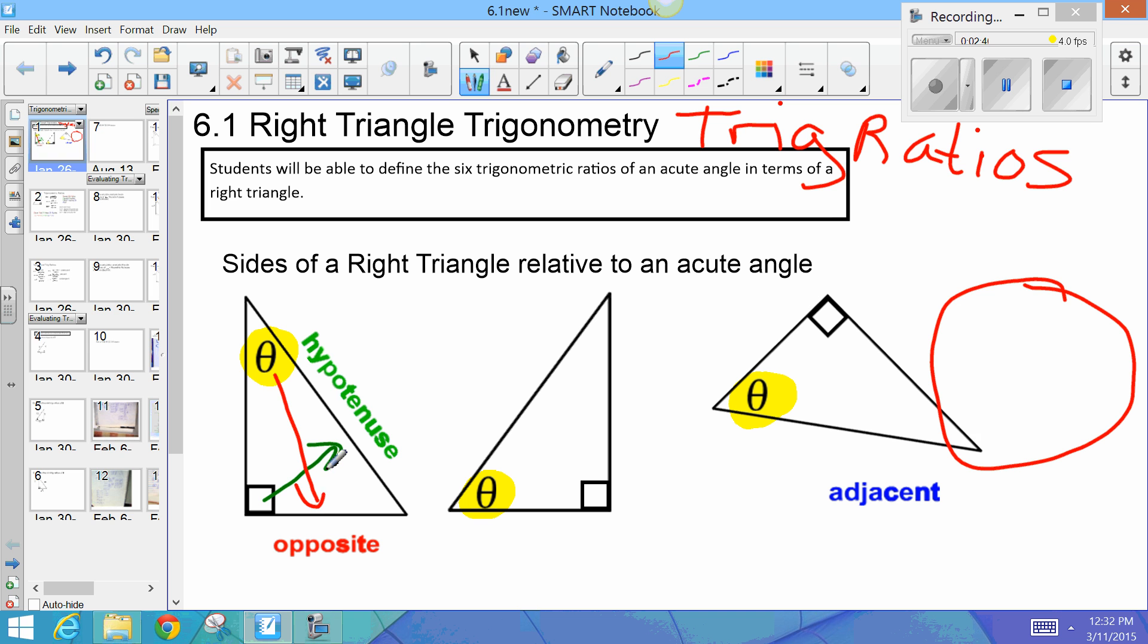So, opposite means opposite of that angle. So, across from. Alright. And adjacent means next to the angle. So, it's going to be one of the two sides that attach theta. But it can't be the hypotenuse. So, there I have for my first triangle.